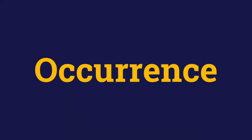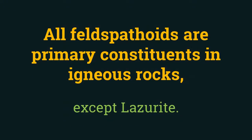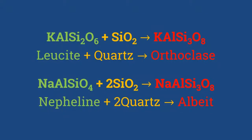Coming to occurrences of feldspathoids: all feldspathoids are primary constituents in igneous rocks, except leucite which has a contact metamorphic origin in limestone. Feldspathoids react with quartz to form feldspars, and due to this, primary quartz and feldspathoids can never be found in the same rock. So feldspathoids do not occur in silica-rich rocks like granite.